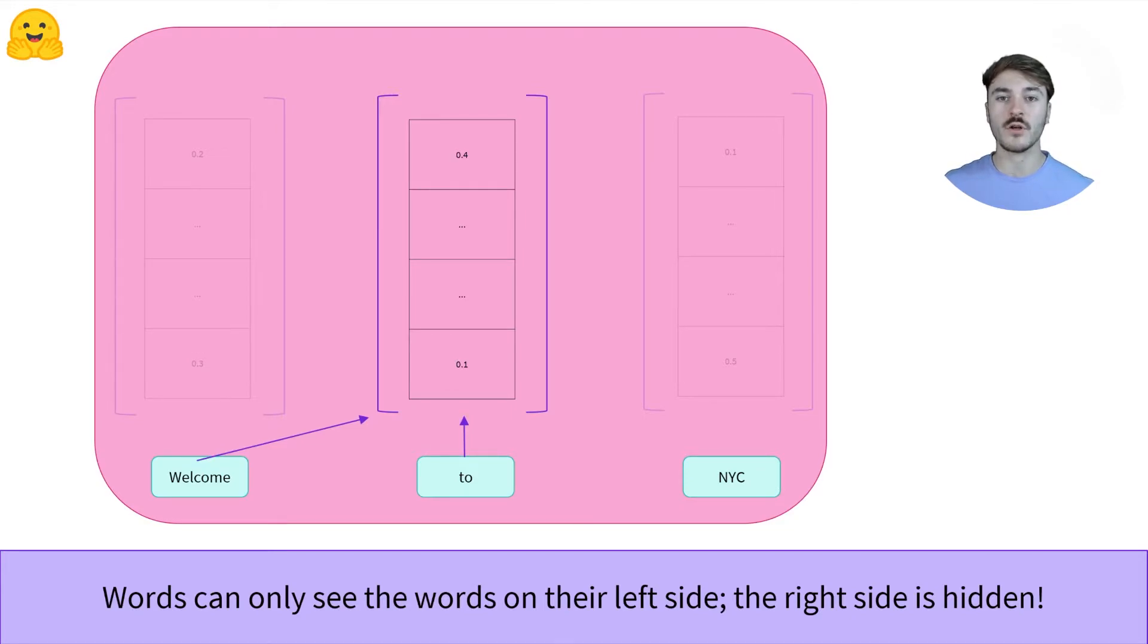Here for example, if we focus on the word two, we'll see that its vector is absolutely unmodified by the NYC word. That's because all the words on the right, also known as the right context of the word, is masked.